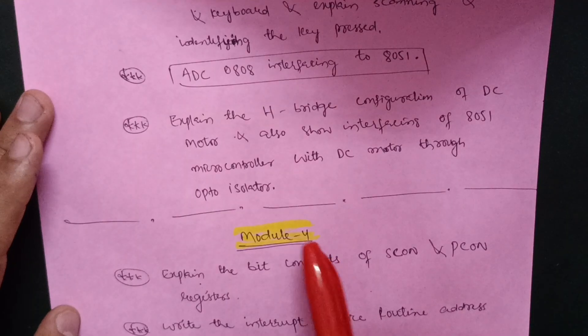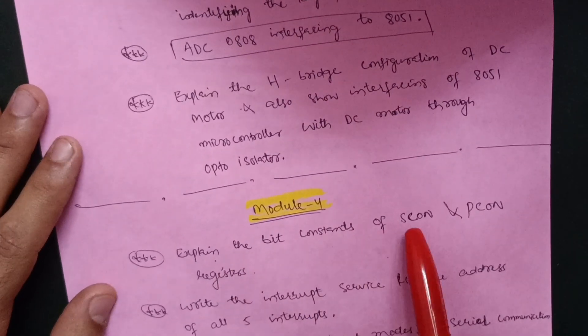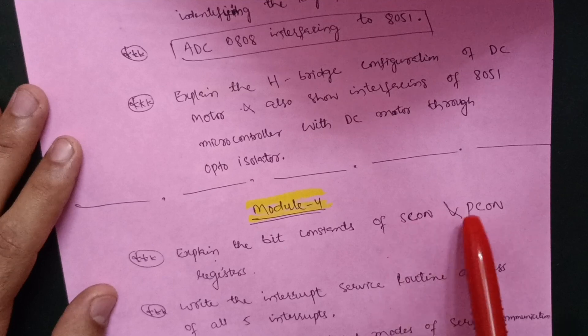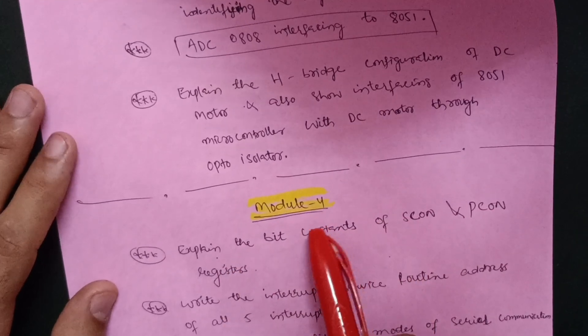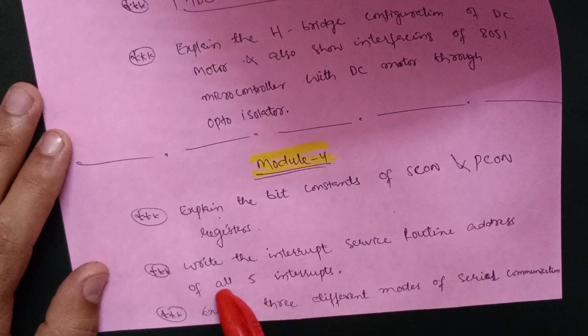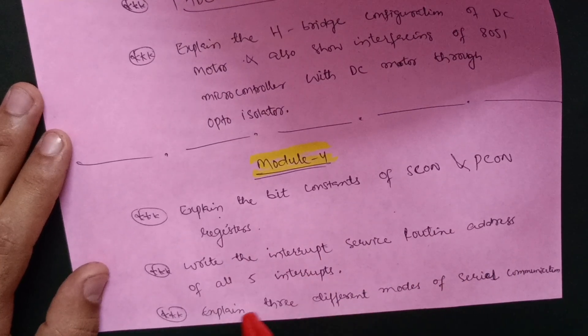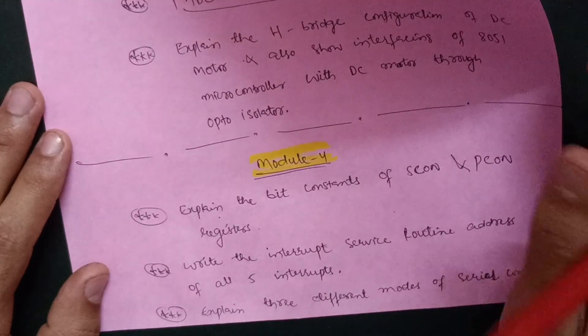Then Module 4 comes up. Explain the bit constants of SCON and PCON registers. This is the most important question as far as Module 4 is concerned. Write the interrupt service routine address of all five interrupts and explain three different modes of serial communication.